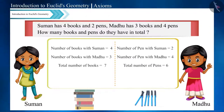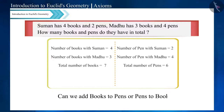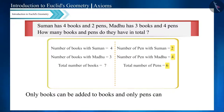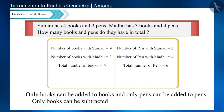Friends, note — here we added books to books and pens to pens. But can we add books to pens or pens to books? No. Only books can be added to books and only pens to pens. And not only addition, but subtraction also — only books can be subtracted from books and only pens from pens.